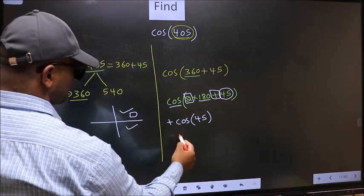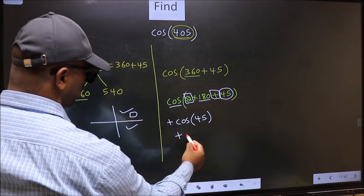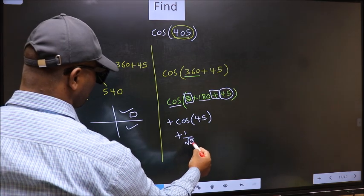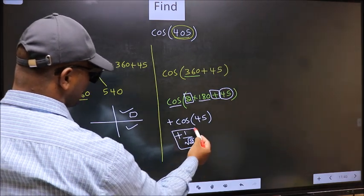So, we should put plus. So, plus cos 45 is 1 by root 2. This is our answer.